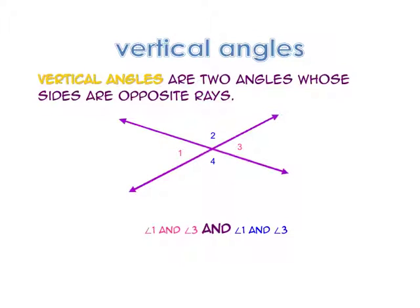Vertical angles are two angles whose sides are opposite rays. Angle 1 and angle 3 are vertical angles — here are the opposite rays. Angle 2 and angle 4 are also vertical angles — here are their opposite rays.